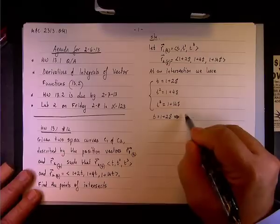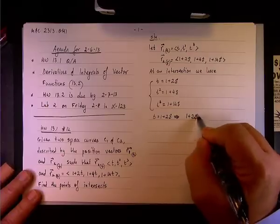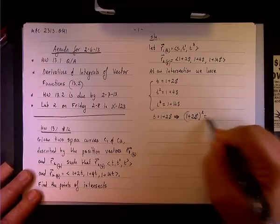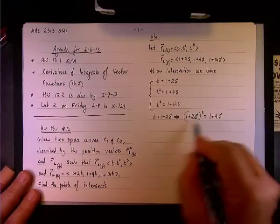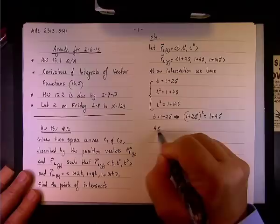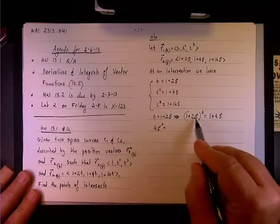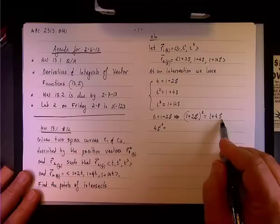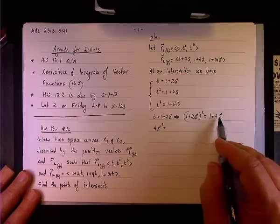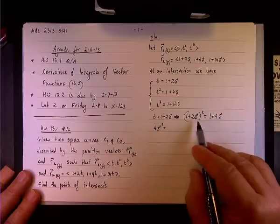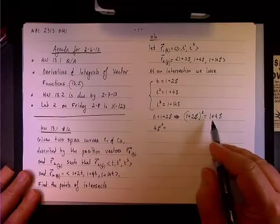Looking at the first equation, T = 1+2s. Substituting into the second equation, (1+2s)² = 1+4s. Expanding gives 1 + 4s + 4s² = 1 + 4s. So we get 4s² + 4s - 4s = 0, and the 4s terms cancel.